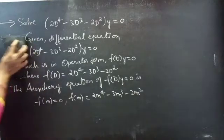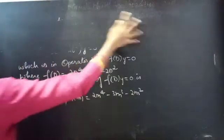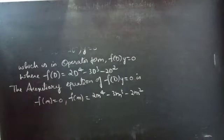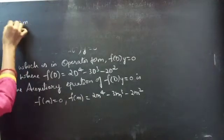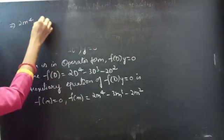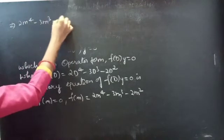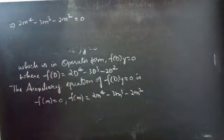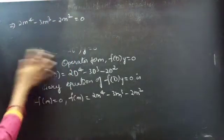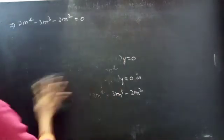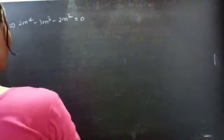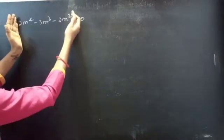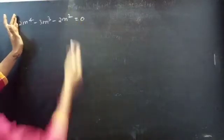For f(m), replace the differential operator D by m, then you will get f(m) = 2m⁴ - 3m³ - 2m². So the auxiliary equation will be 2m⁴ - 3m³ - 2m² = 0. Now we need to find the roots of this auxiliary equation, or factors of this polynomial.